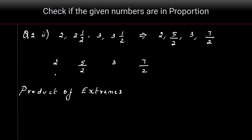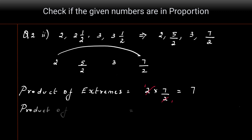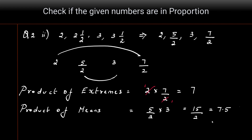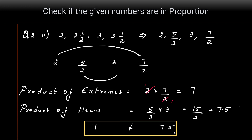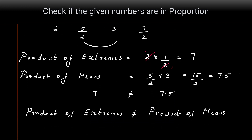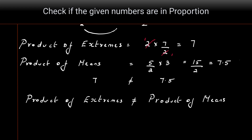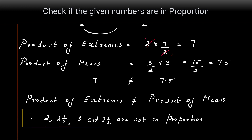Product of extremes: 2 × 7/2 — the 2s cancel — giving 7. Product of means: 5/2 × 3 = 15/2 = 7.5. Since 7 ≠ 7.5, the product of extremes does not equal the product of means. Therefore the given numbers 2, 2½, 3, and 3½ are not in proportion.